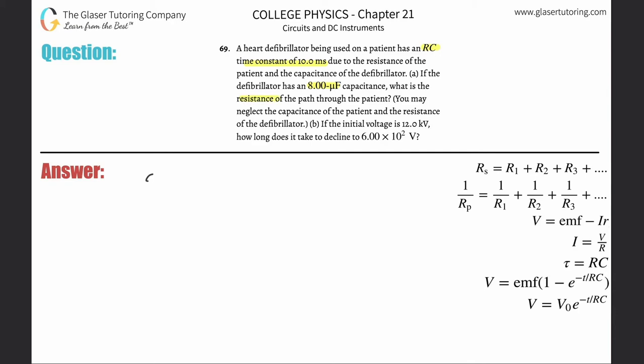So basically just focus on what's given. They told you the time constant tau is going to be 10 milliseconds, but we need that in seconds, so just multiply that by 10 to the minus 3. They also told us the capacitance, but we need that in farads. They gave it to us in microfarads, so just take the 8 and multiply it by 10 to the minus 6.